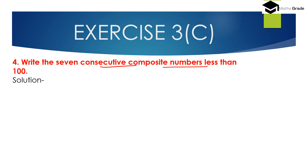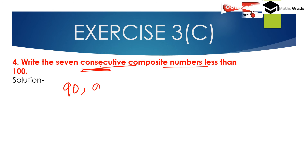Consecutive means following one after another — the next number in sequence. So we will find 7 consecutive composite numbers less than 100. The 7 consecutive composite numbers are 90, 91, 92, 93, 94, 95, 96. All of these are composite numbers which are not prime.